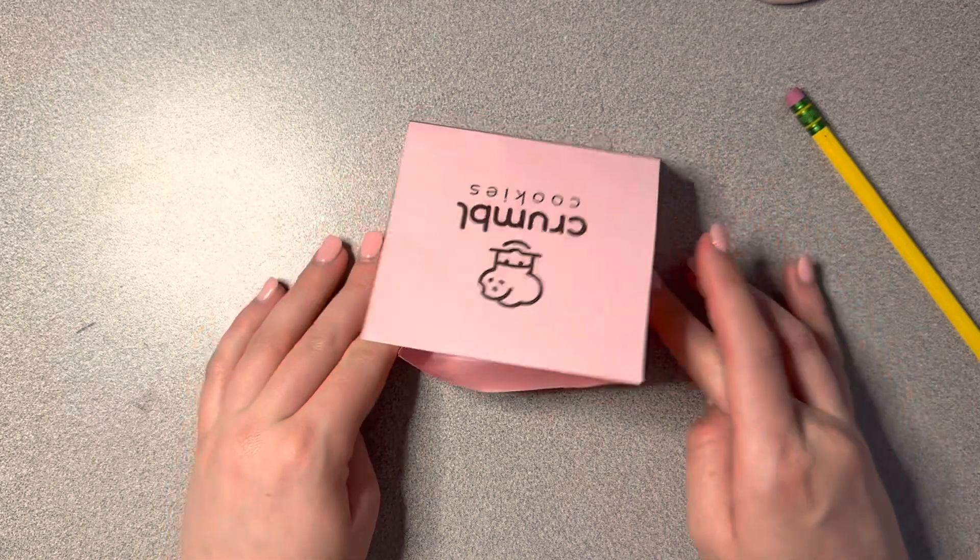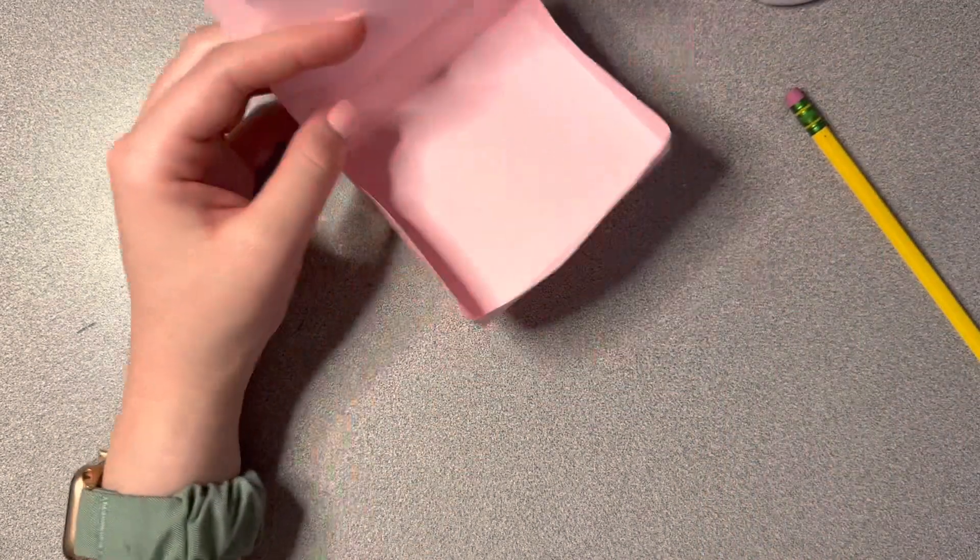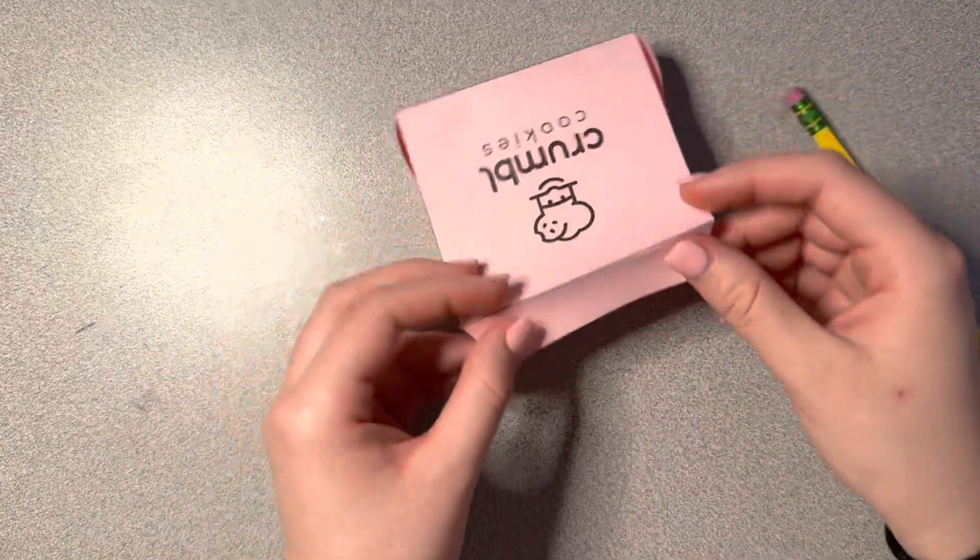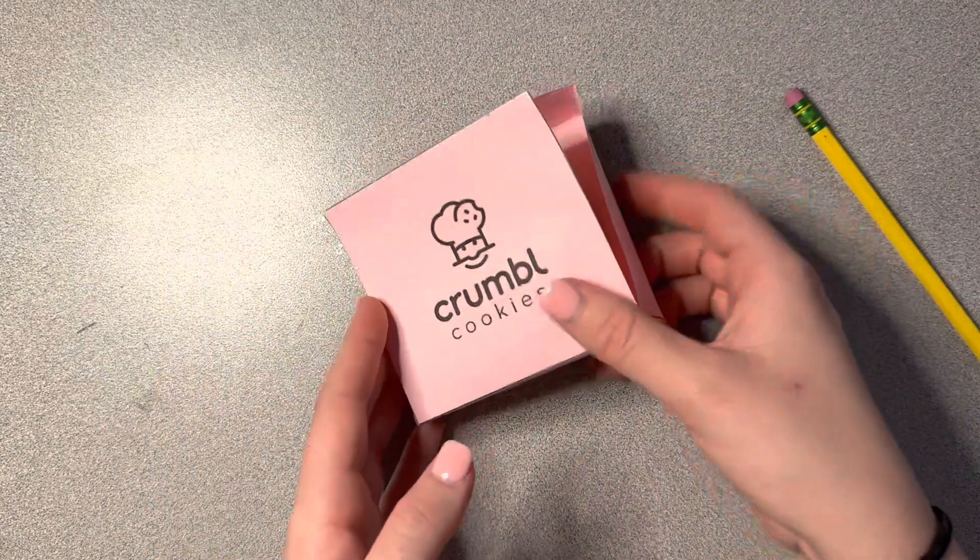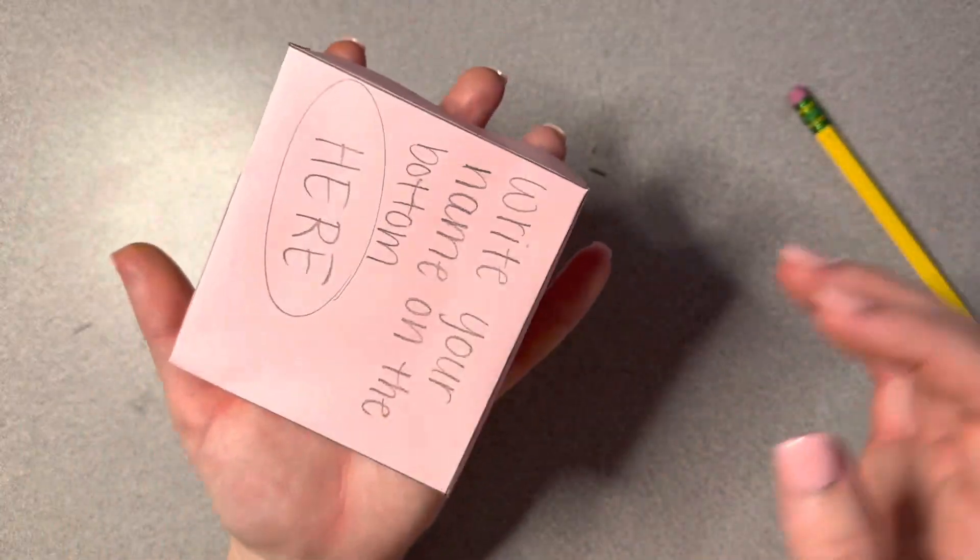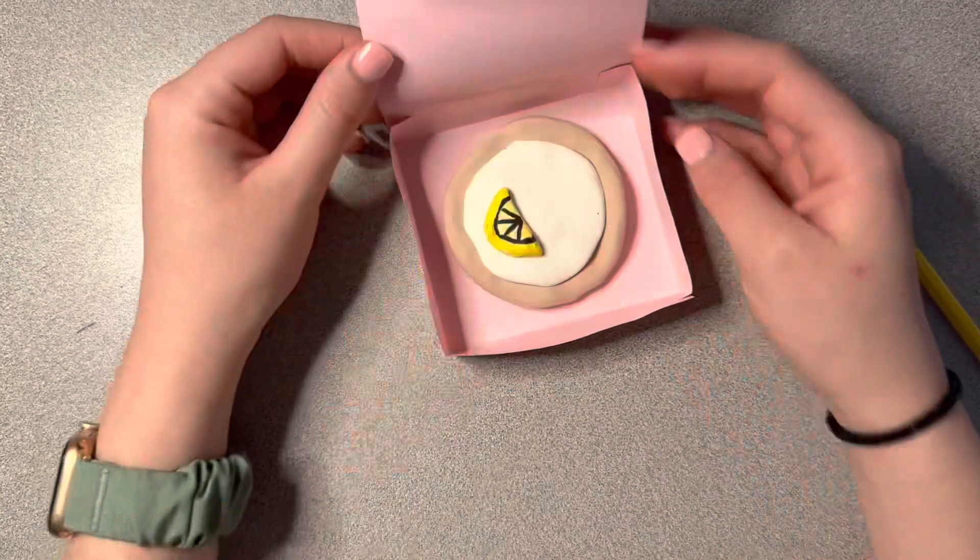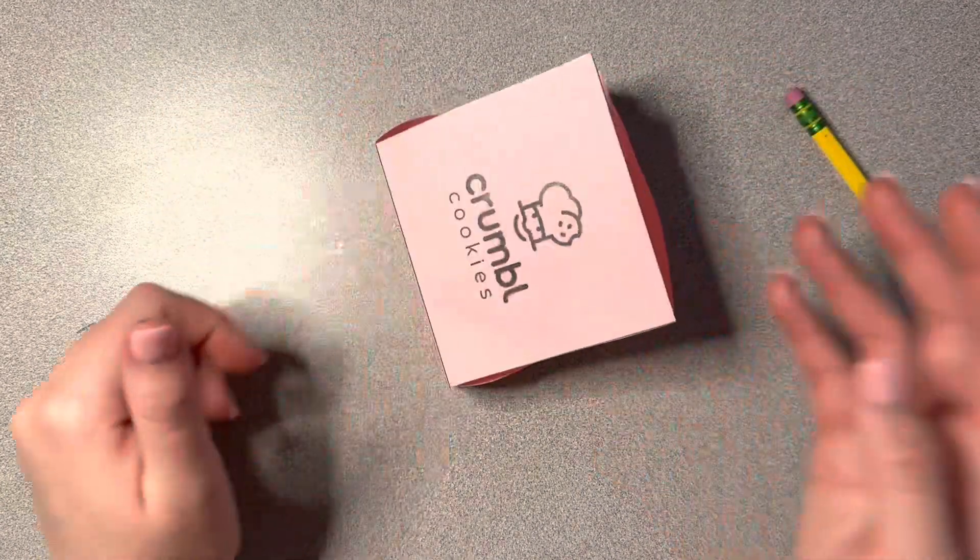Okay. And then you can just stick your cookie right inside. And then you have your little box. Make sure your name is on the bottom. That's why I said write it here. And then you have your little crumble cookie in a box.